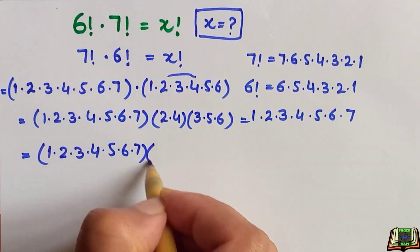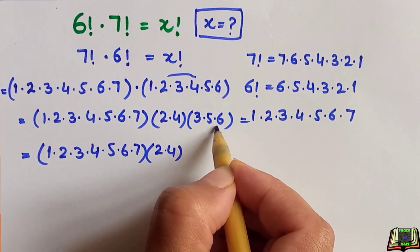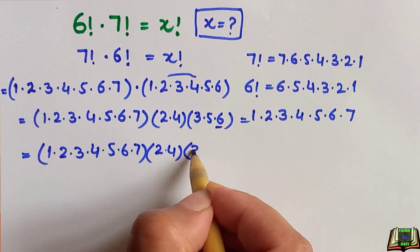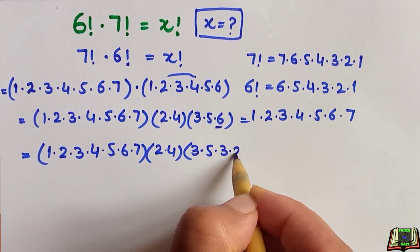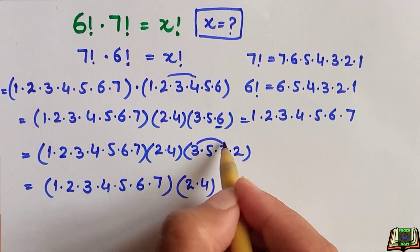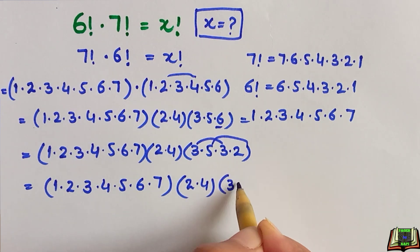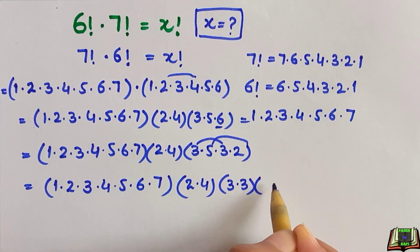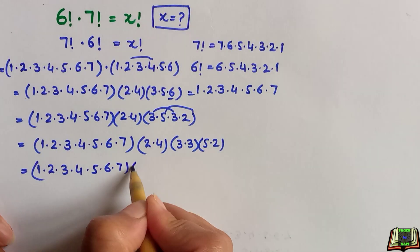In the next step, we keep 2 × 4 as it is, and we rewrite 6 as 3 × 2. Then we make another pair: 3 × 3 and 5 × 2.